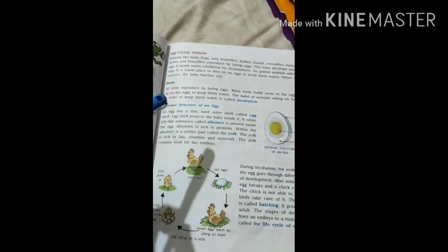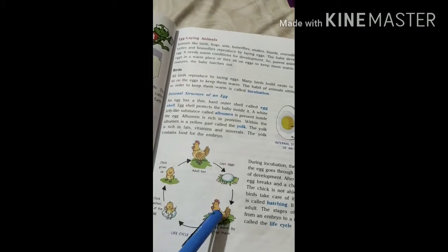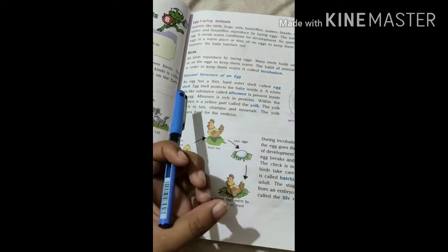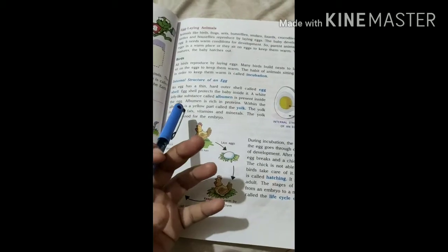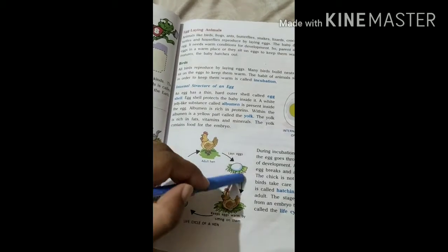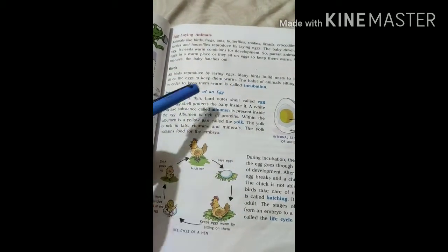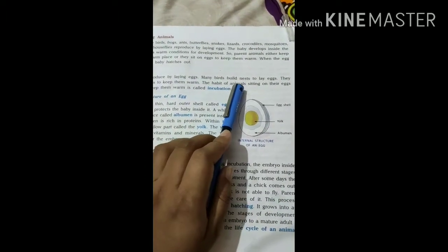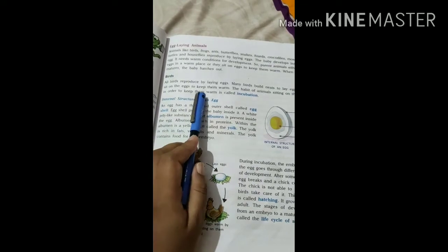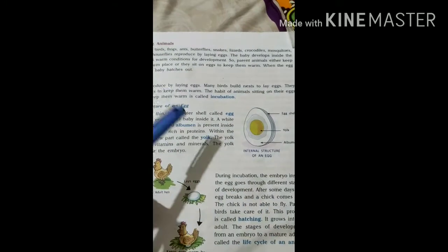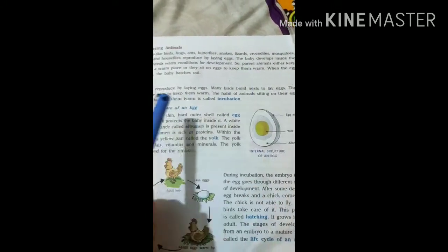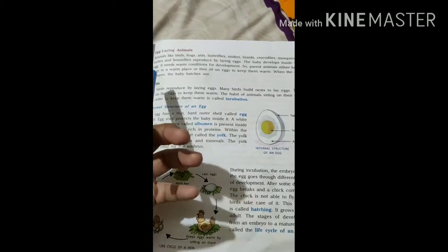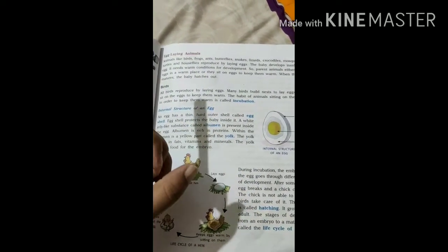They sit on the eggs to keep them warm. The habit of animals sitting on their eggs in order to keep them warm is called incubation. It is a kind of habit where a bird or animal is sitting on their eggs to keep them warm.